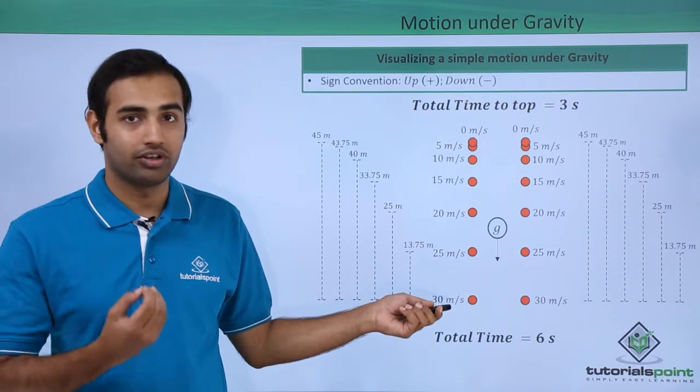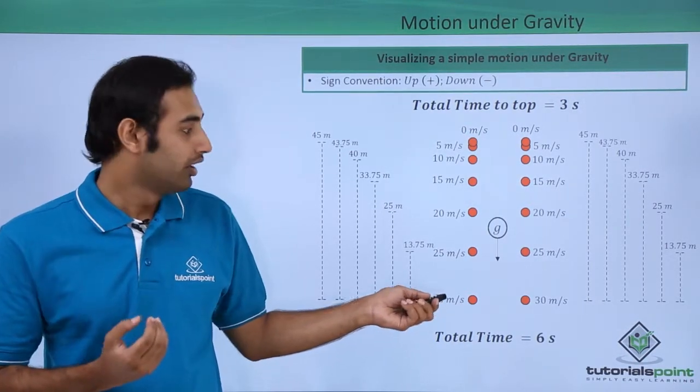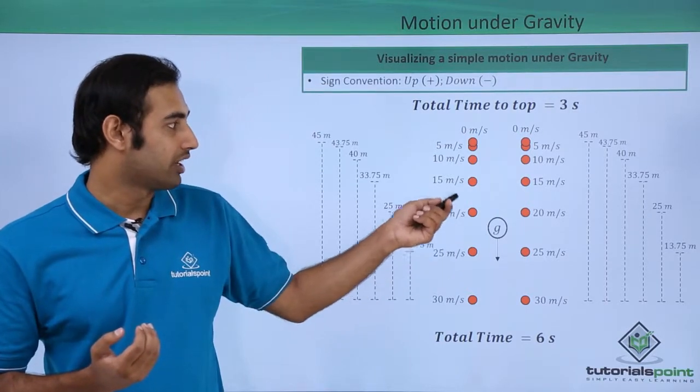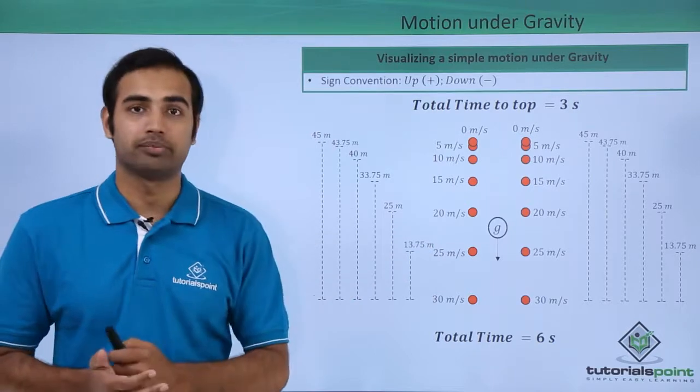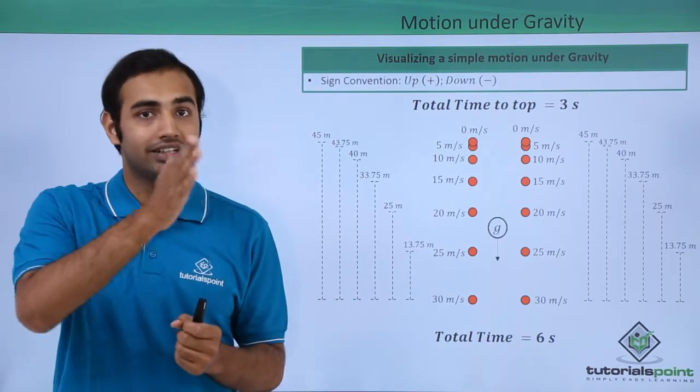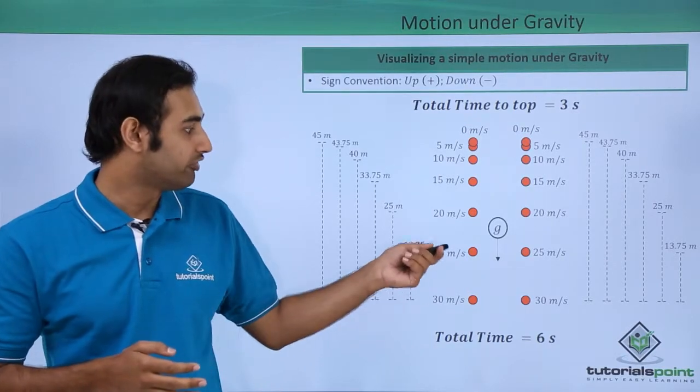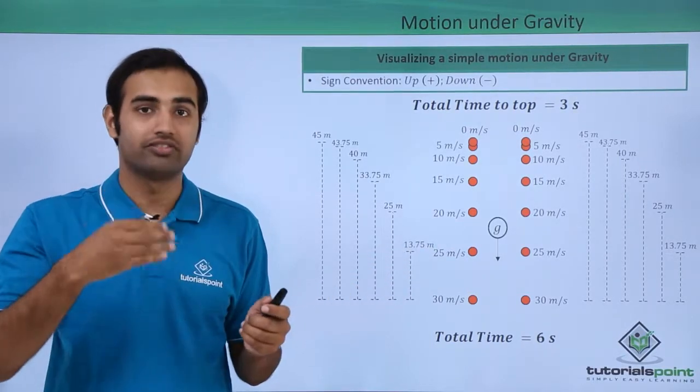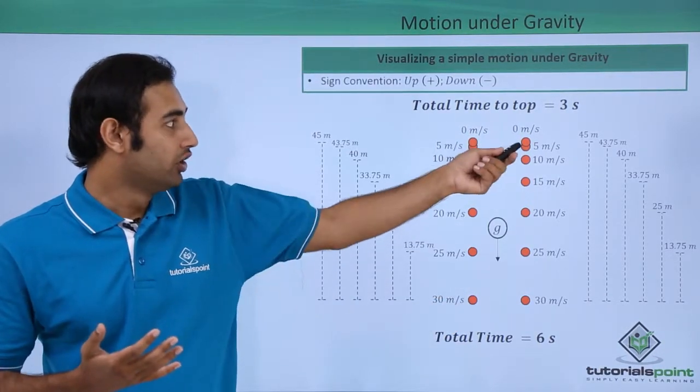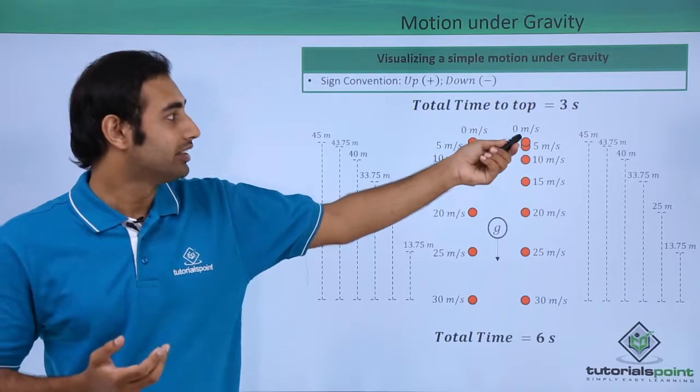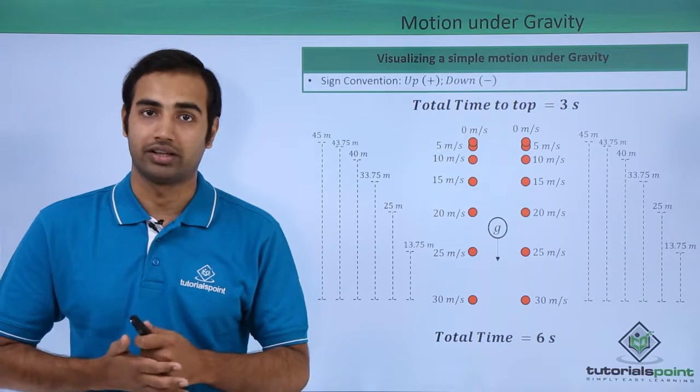So first of all, let's look at the velocity value. Our initial velocity is 30 meters per second, which is the u value. Now as the time passes, after every half second you can see the velocity decreases by 5 meters per second, or in other words, with linear change of time we have linear change in velocity. So every 5 meters per second decrease for every half second increase in time. Now while coming down you can see once again the same thing is repeated. So there is a linear variation of velocity with time.